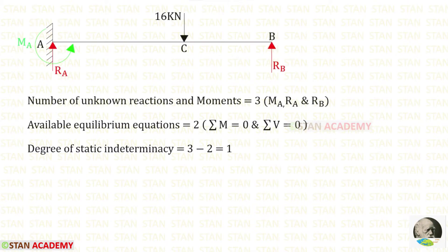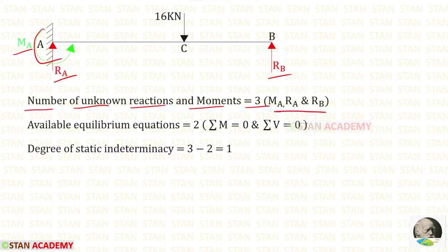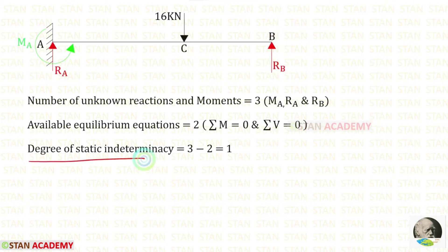Now let us find the degree of static indeterminacy. In this beam the number of unknown reactions and moments are 3: the moment MA and the vertical reactions RA and RB. The available equilibrium equations are 2: sigma M = 0 and sigma V = 0. The degree of static indeterminacy is equal to 3 minus 2, which gives us 1.